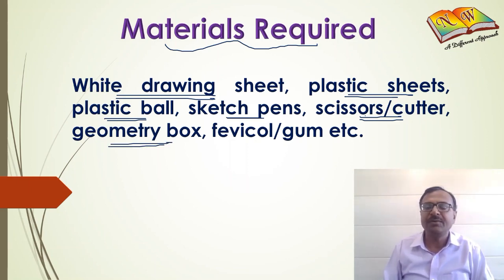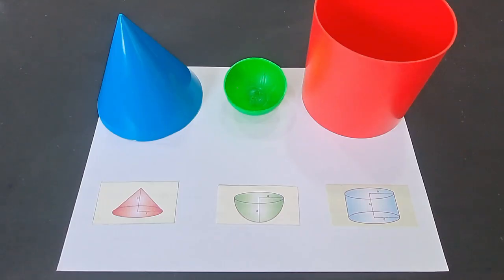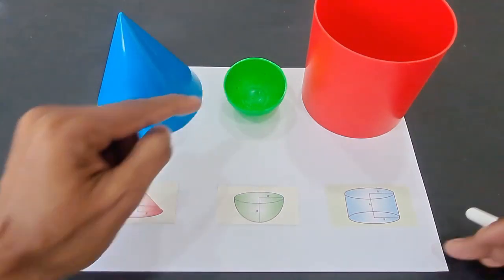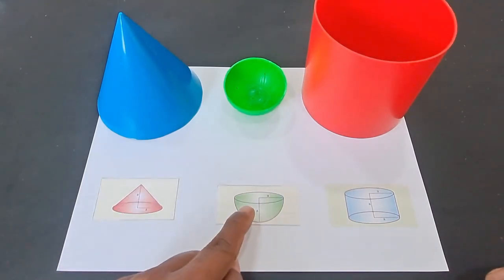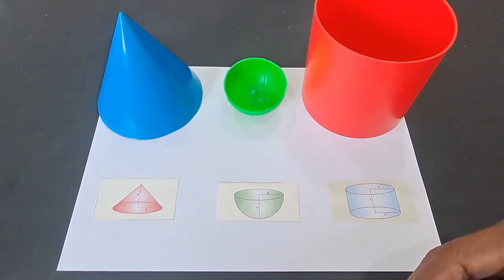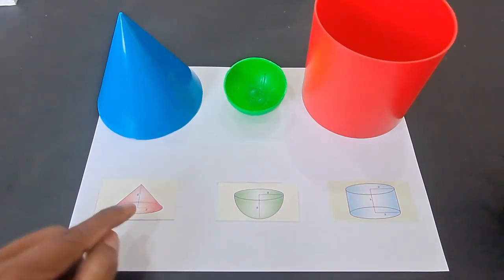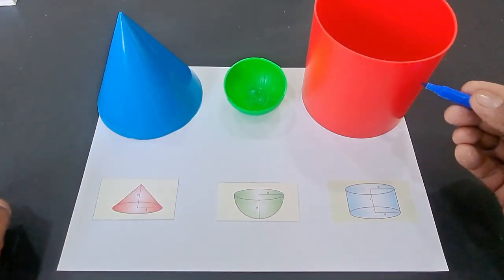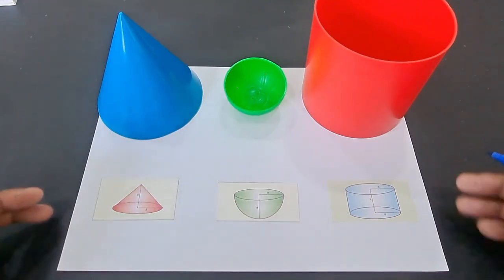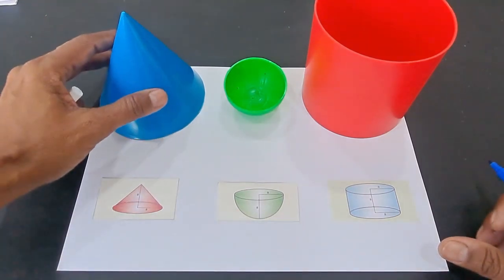Let's perform this activity now. In this activity, we have taken a cone, a hemisphere, and a cylinder. As you can see, we have pasted the pictures also, and these three pictures show that the radius and height of the cone, the radius of the hemisphere, and the radius and height of the cylinder all have to be equal for performing this activity.